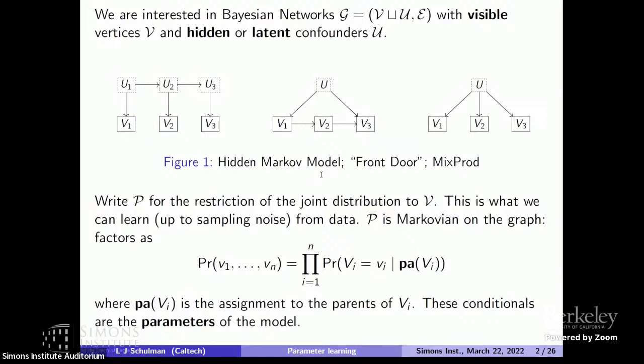The notation I'm going to use throughout the talk is: p is the distribution — the visible distribution — the distribution induced on the visible variables v, and this is what you would learn from the data. p is of course Markovian on the graph, so it can always be expanded as the product over vertices of the probability they take this value conditioned on their parents. This list of conditional probabilities — these are the parameters of the model.